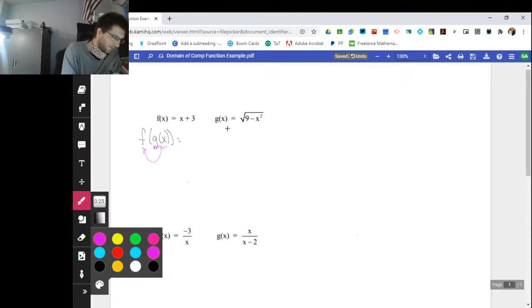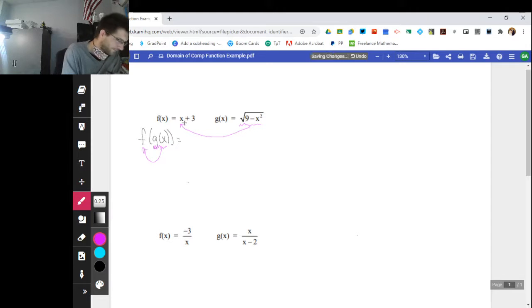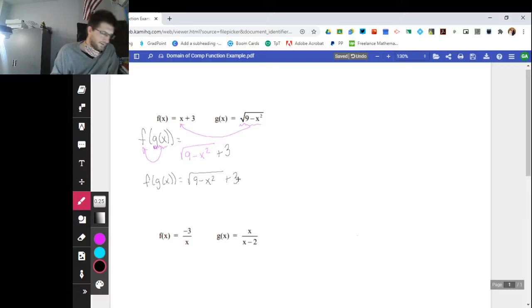So for this particular one, I'm taking this entire g function and I'm going to put it into the x over here. If I do that, I get the square root of 9 minus x squared. And then this plus 3 is still on the outside. Not a whole lot that I can do with this particular function as far as simplifying. So I'm just going to leave it alone like this.